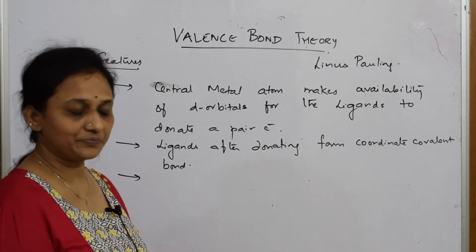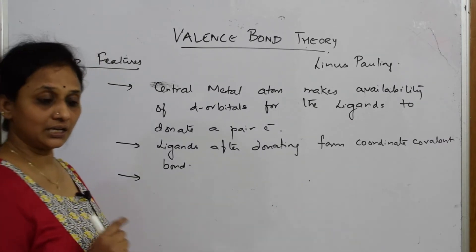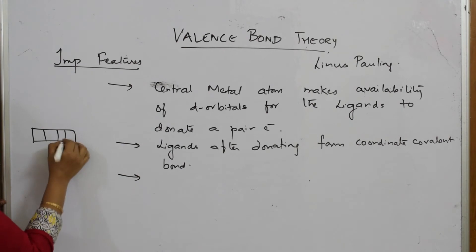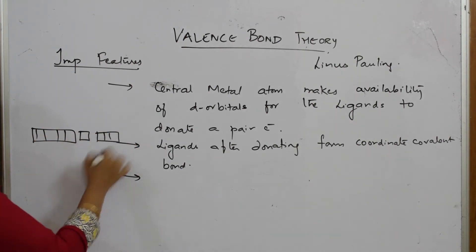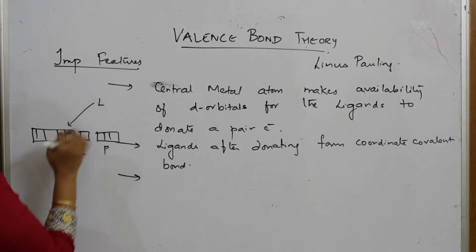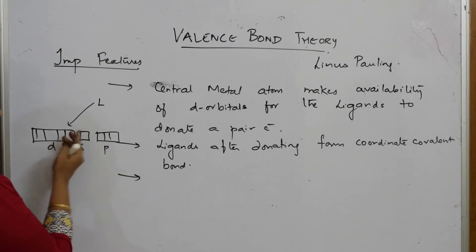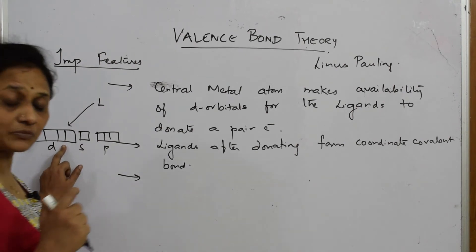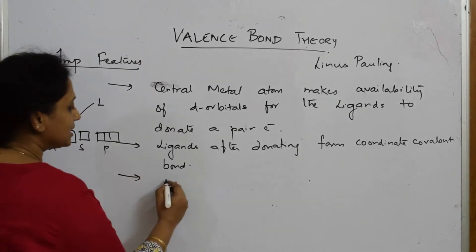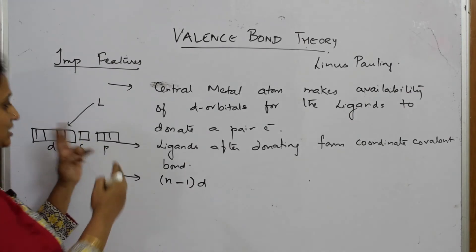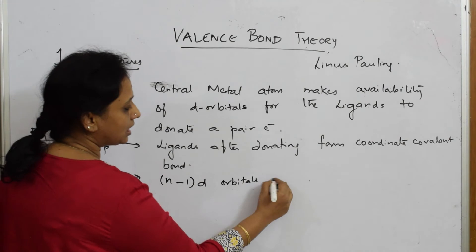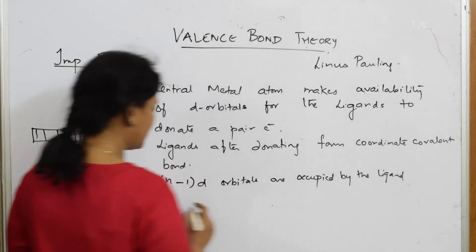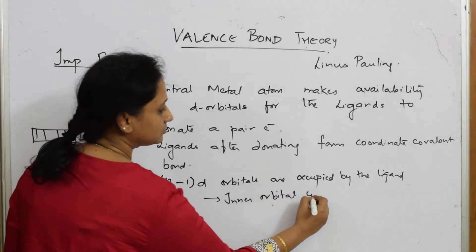Suppose the ligand is occupying the inner end of the orbitals — imagine the arrangement: d, s, p — and the ligand is approaching and donating electrons. If after hybridization it occupies the inner d orbitals, that means the (n−1)d orbitals are occupied by the ligand. These are called inner orbital complexes. For example, d²sp³ is an inner orbital complex.